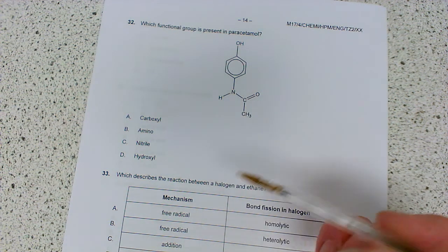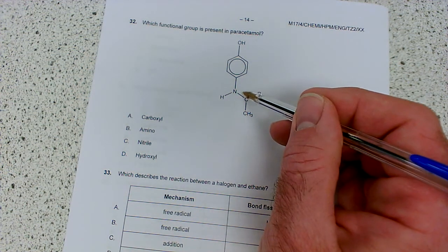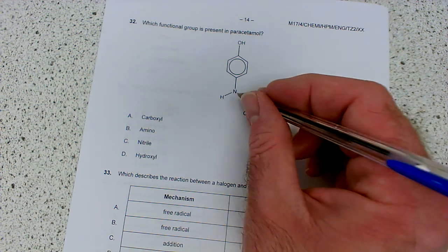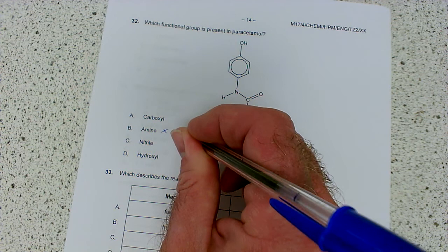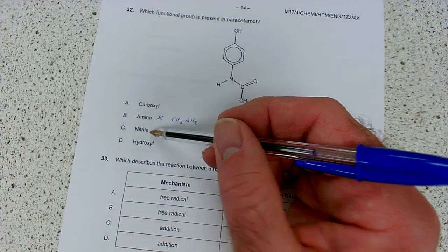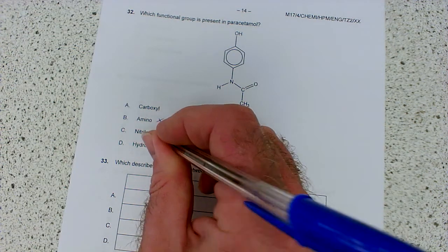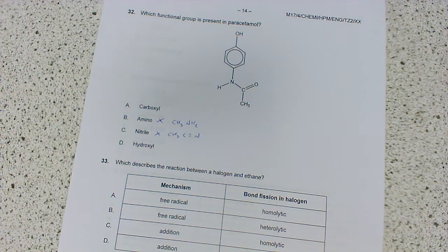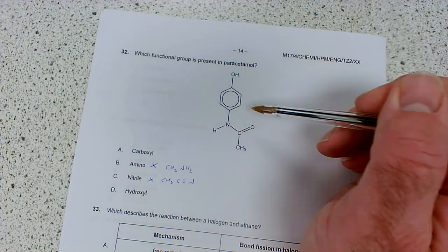Amino group, definitely not. That's an amide. An amino group would be nitrogen not connected to a C double bond O, like methylamine CH3NH2. Nitrile, definitely not - you'd need a carbon-nitrogen triple bond, like ethanenitrile.